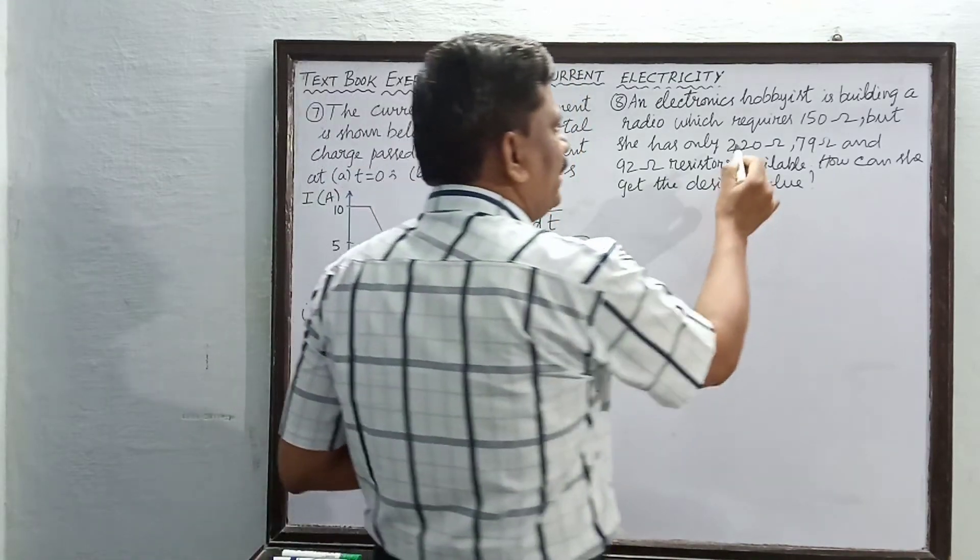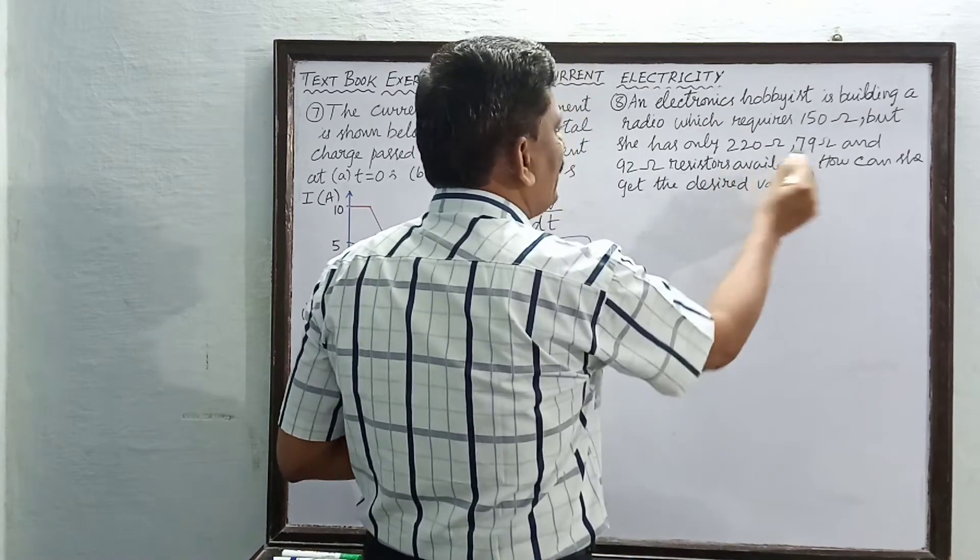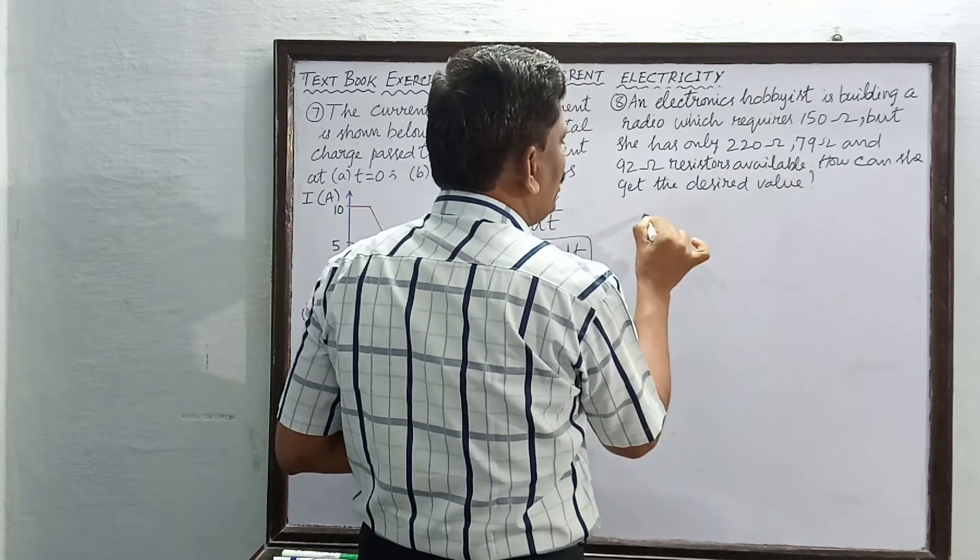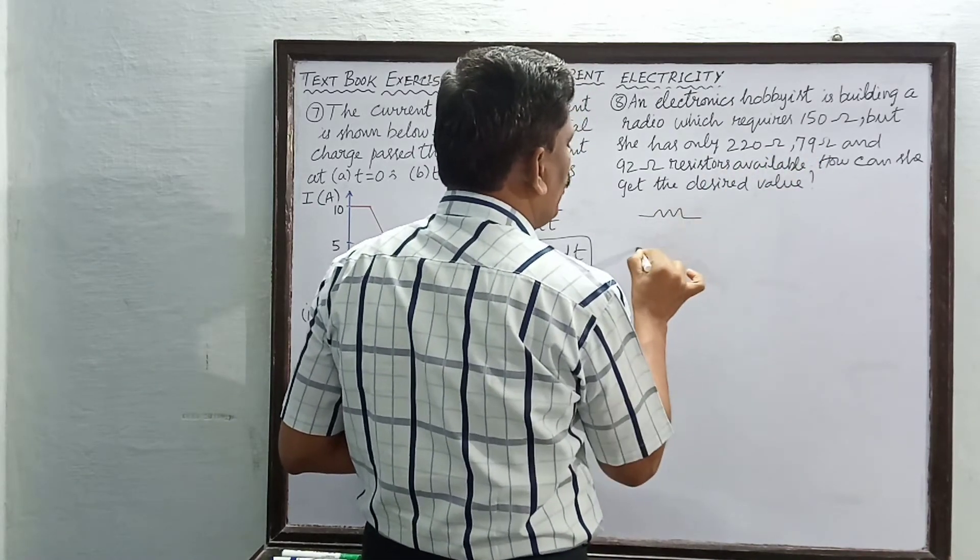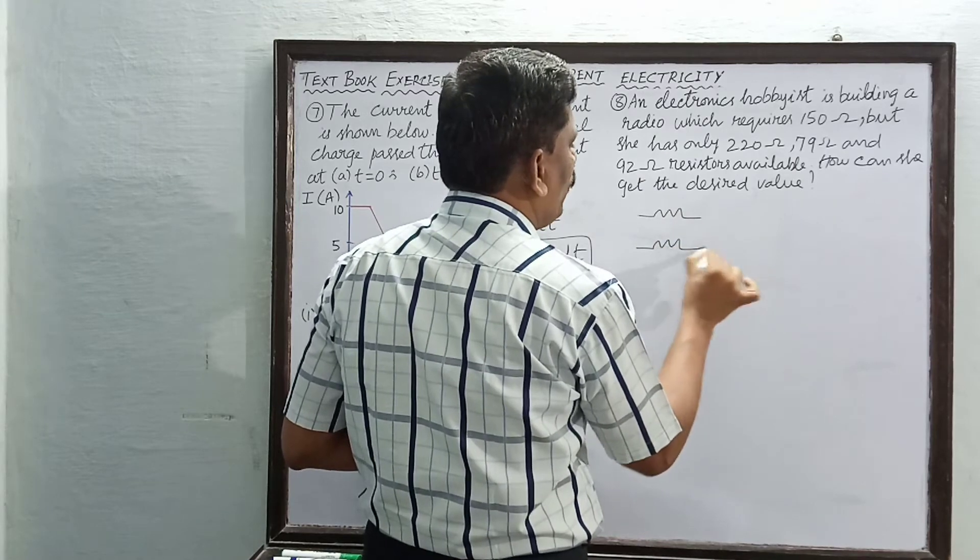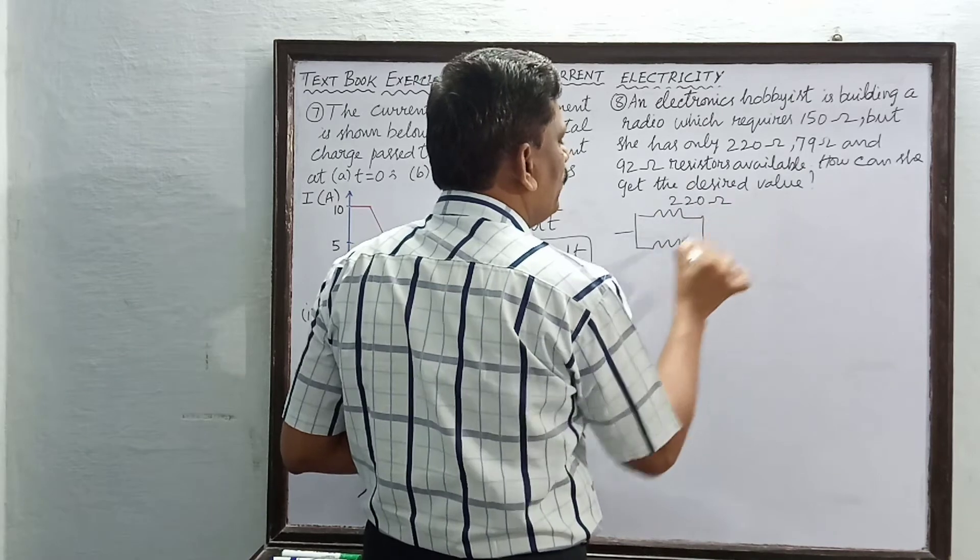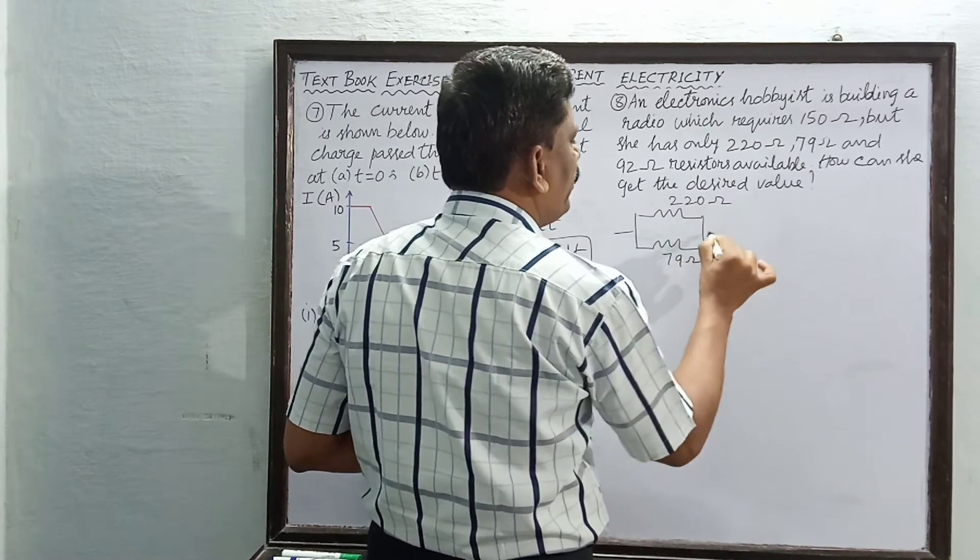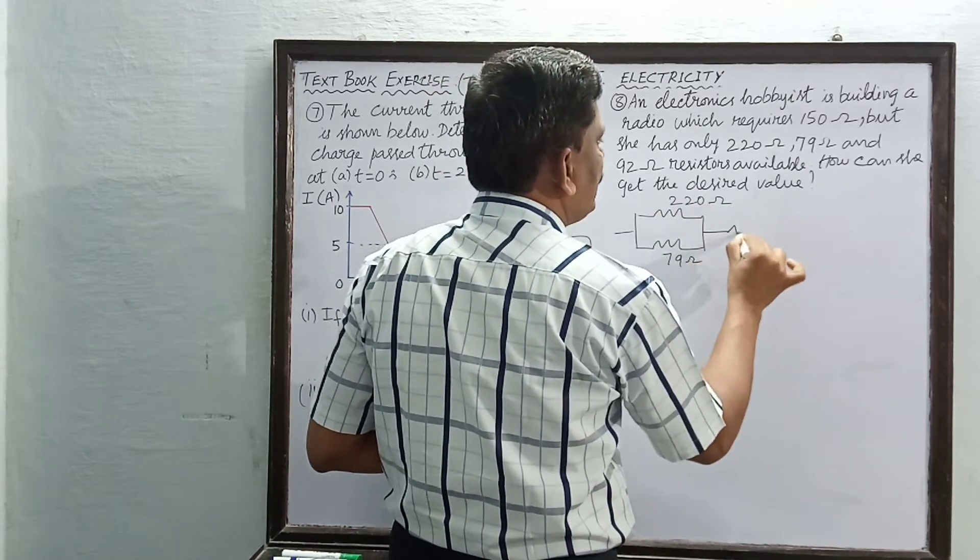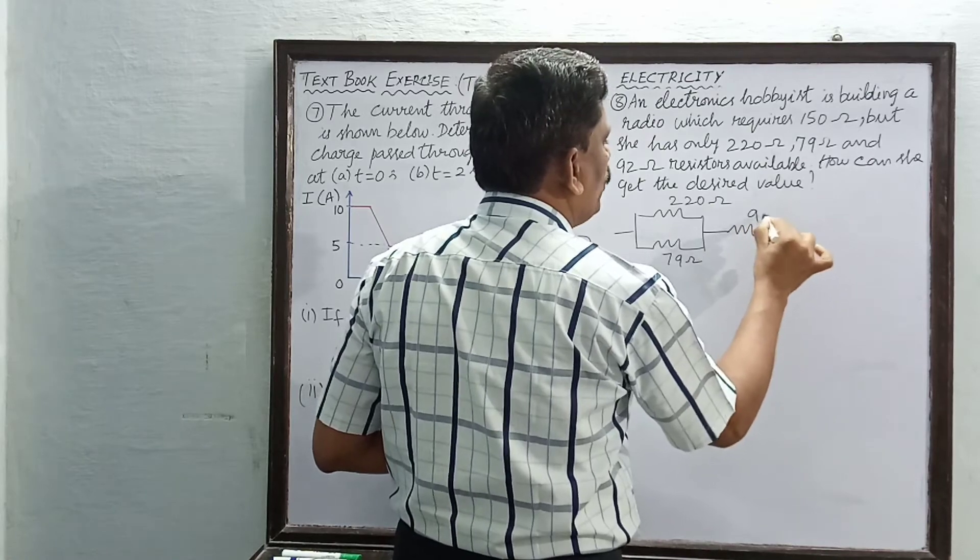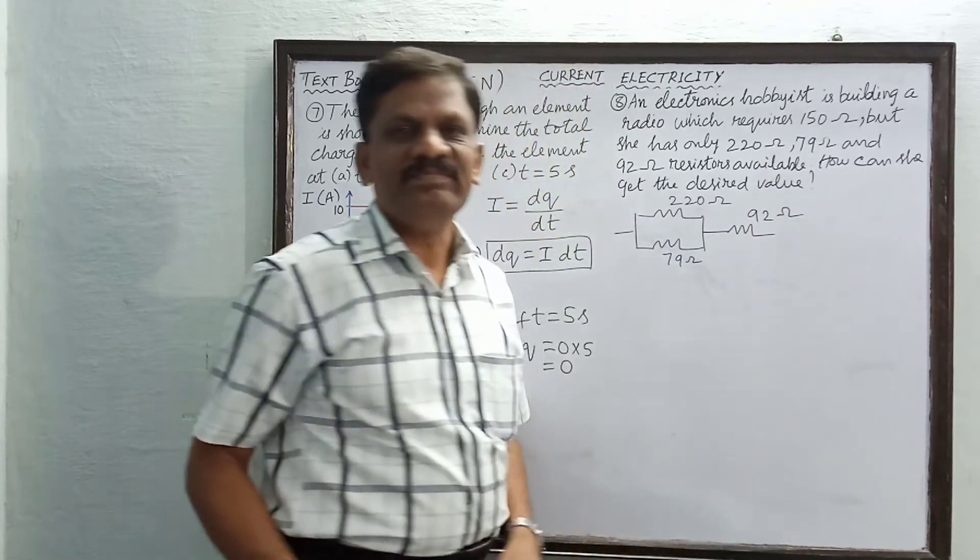Now let us try the first two resistors, namely 220 ohm and 79 ohm in parallel. This is 220 ohm and this is 79 ohm in parallel, and this is in series with 92 ohms.